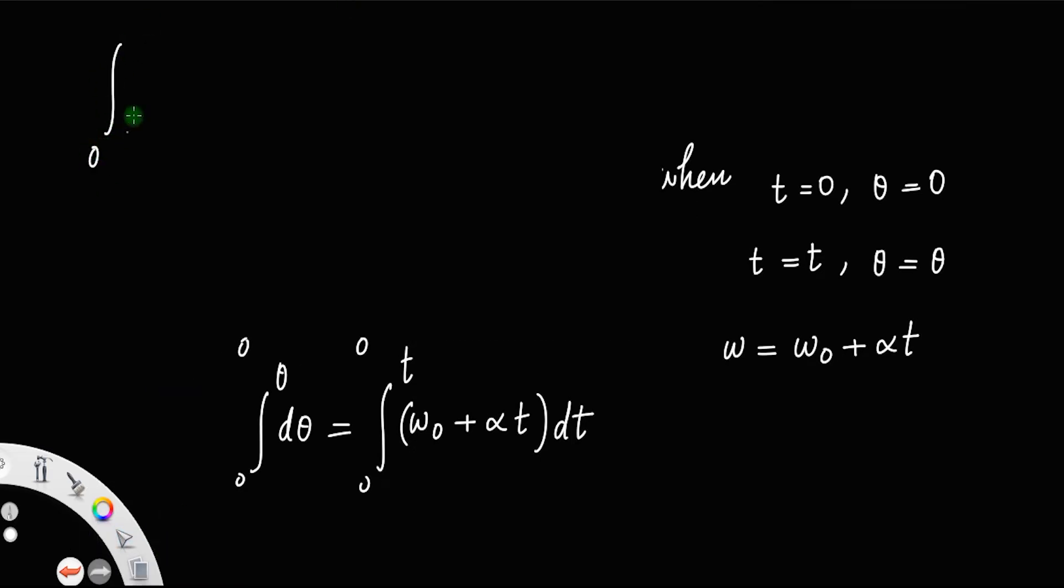Integral from 0 to θ of dθ equals integral from 0 to t of ω₀dt plus integral from 0 to t of αt dt.